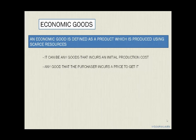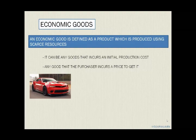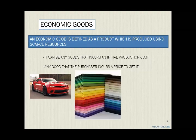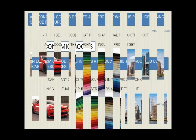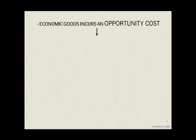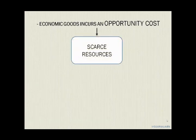The second feature is that the purchaser incurs a price to get it — meaning if the consumer intends to purchase a product, a certain price must be paid. Major examples include a car, fabric, and buildings. The third main feature is that economic goods incur an opportunity cost, because such goods are produced using scarce resources.